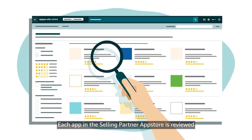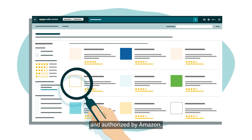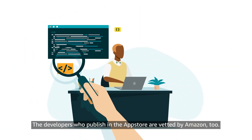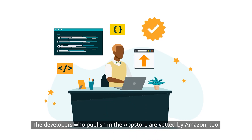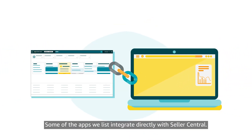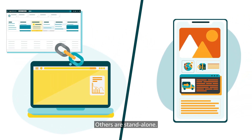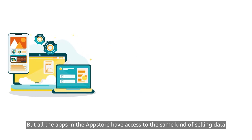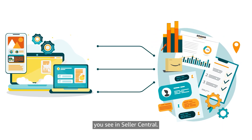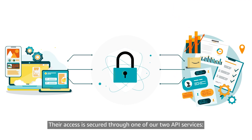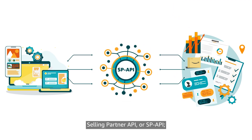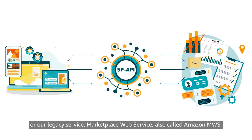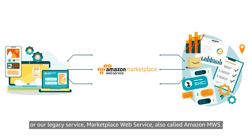Each app in the Selling Partner App Store is reviewed and authorized by Amazon. The developers who publish in the App Store are vetted by Amazon, too. Some of the apps we list integrate directly with Seller Central; others are standalone. But all the apps in the App Store have access to the same kind of selling data you see in Seller Central. Their access is secured through one of our two API services: Selling Partner API, or SPAPI, or our legacy service, Marketplace Web Service, also called Amazon MWS.